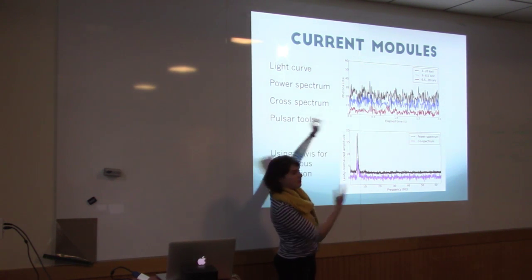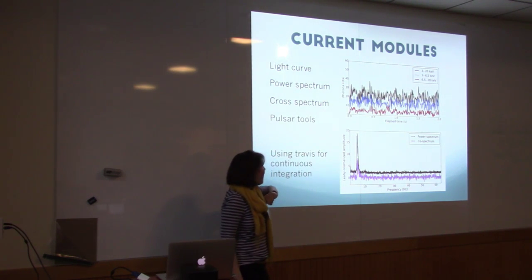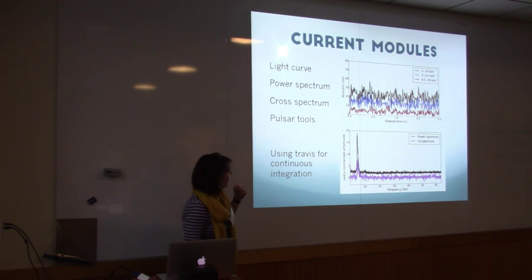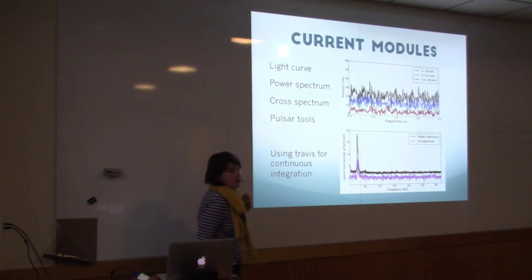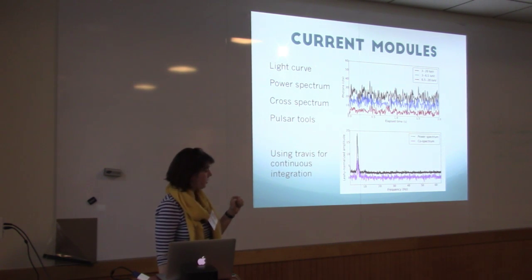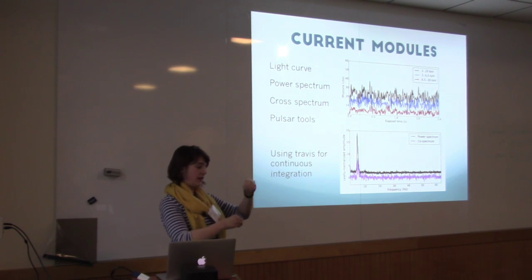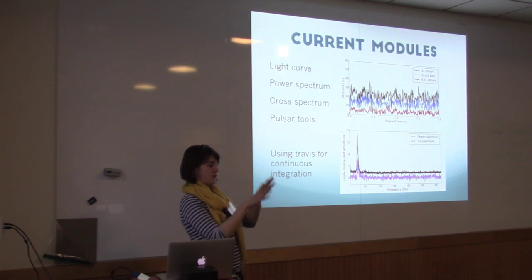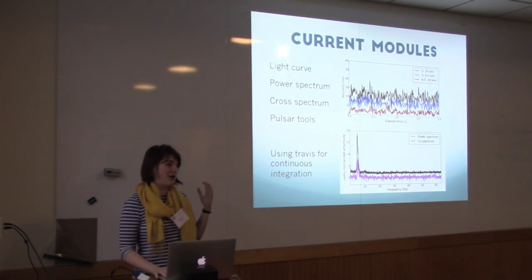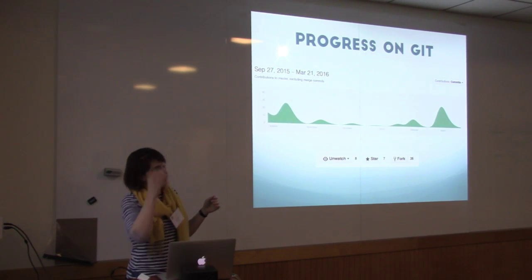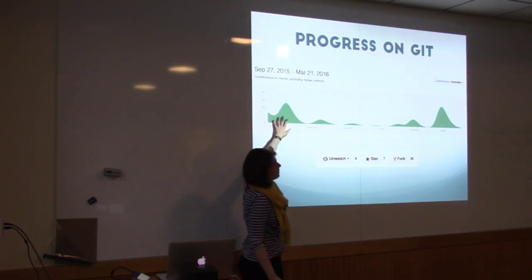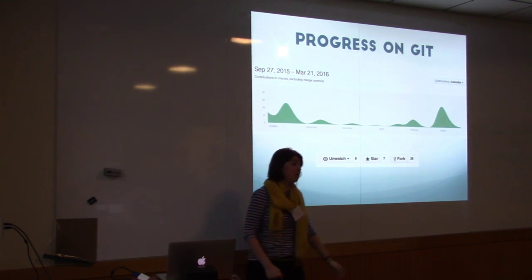We have a light curve module — the black represents big energy bands and the other two are smaller energy bands. We have a power spectrum class shown in black. The cross spectrum is in one of my branches and hasn't been pushed to master yet, shown in pink, so you can begin to do co-spectral and cross-spectral analysis. There are also pulsar tools that Matteo Bacchetti pushed from his MaltPynt package. We are using Travis for continuous integration, which has been a learning curve, but it will make the code much more robust in the long run.